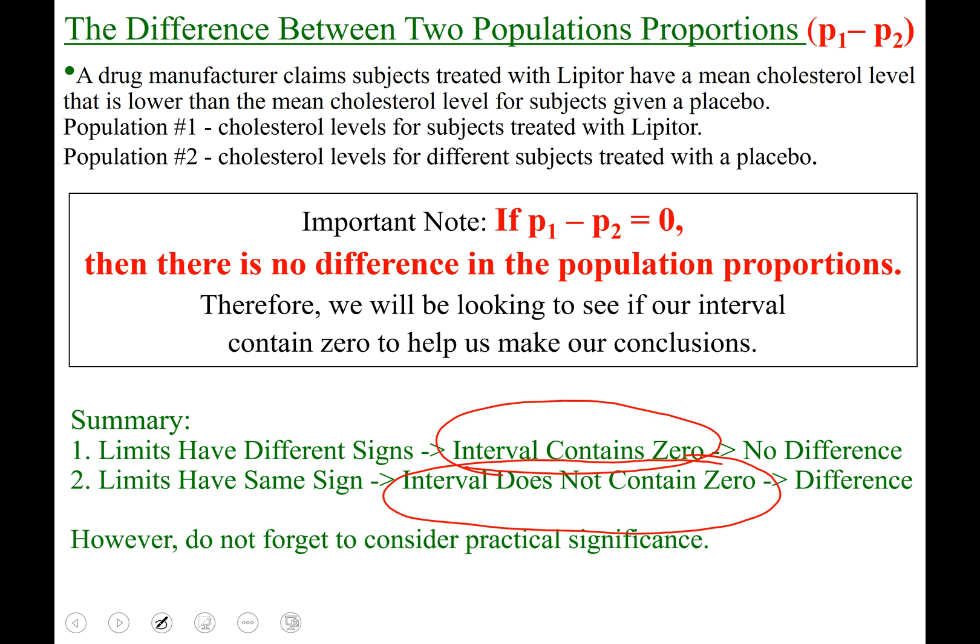We always want to remember, along with statistical significance, we want to remember practical significance. We'll see some examples where 0 is in the interval, but it's very far to one of the limits, and we may need more data if that's the case.